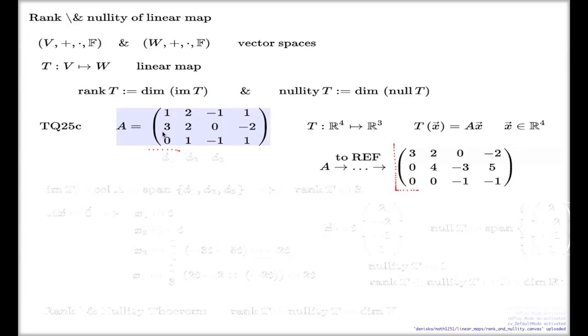If you accept this as a row echelon form of this matrix, then remember the image space we have just established in case of the matrix type linear map. Image space is simply the column space of the matrix. And from here we can see that the first three columns are leading columns. So if I call these first three columns A₁, A₂, and A₃,